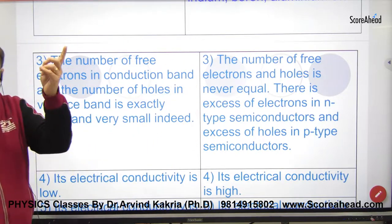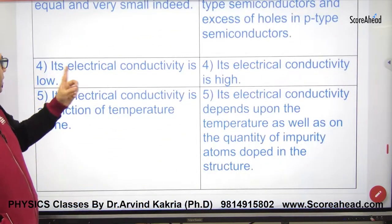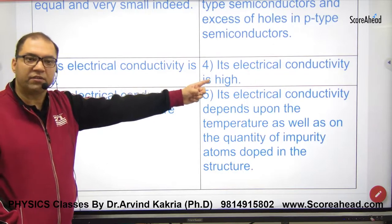In n-type there are excess electrons, in p-type there are excess holes. Electrical conductivity is low for intrinsic semiconductors, electrical conductivity is high for extrinsic semiconductors.